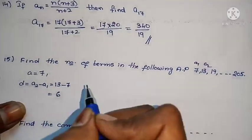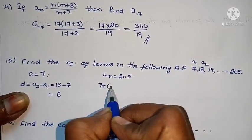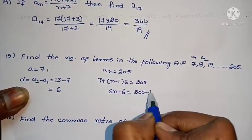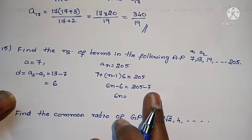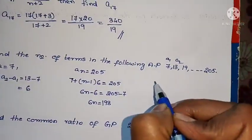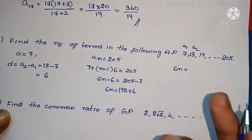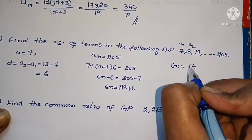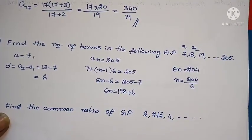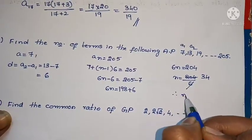Next AP problem. Given An equals 205, find n. We use the formula: An equals A plus (n-1)D. A equals 6, D equals... substituting: 6 plus (n-1) times 6 equals 205. Solving: 6n minus 6 plus 6 equals 205. 6n equals 204. Therefore n equals 204 by 6 equals 34.